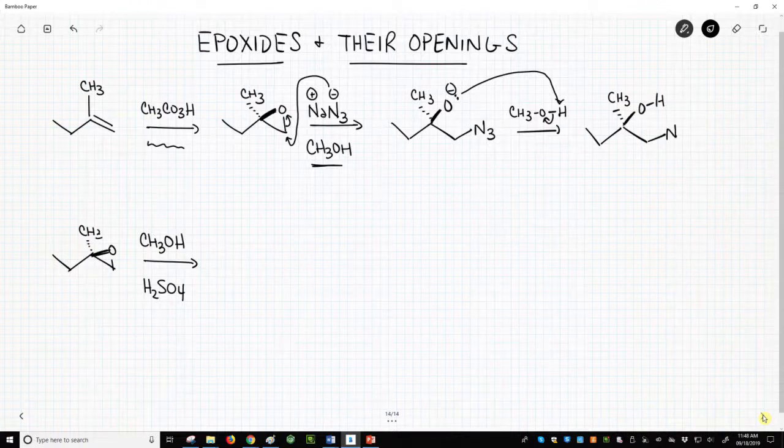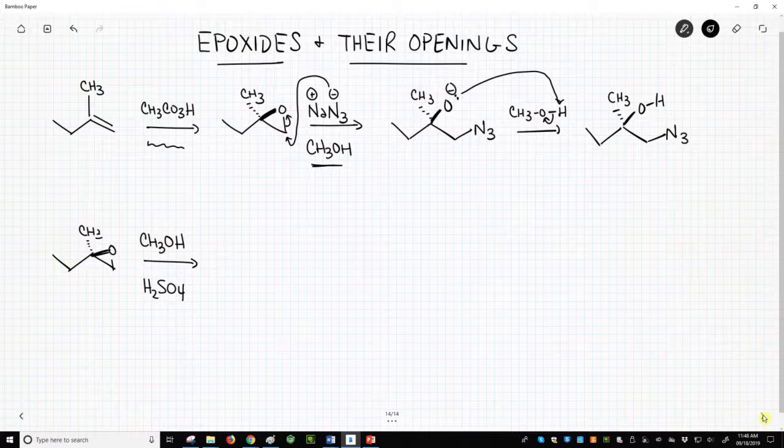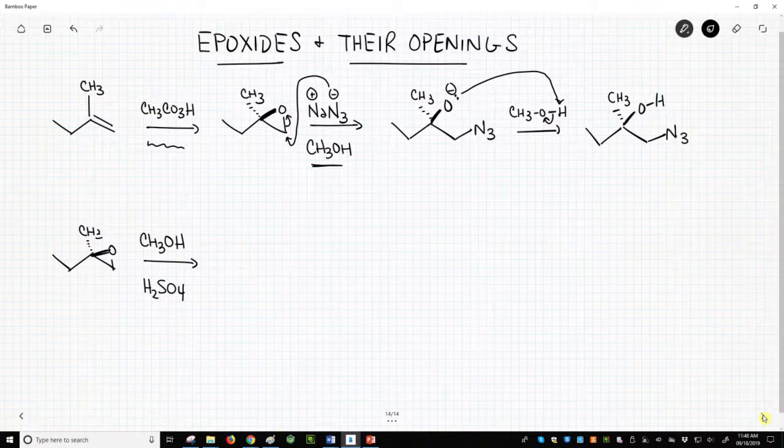OH and N3. Although the azide attacked a carbon with no stereochemistry, if it had been a stereocenter, there would have been inversion.